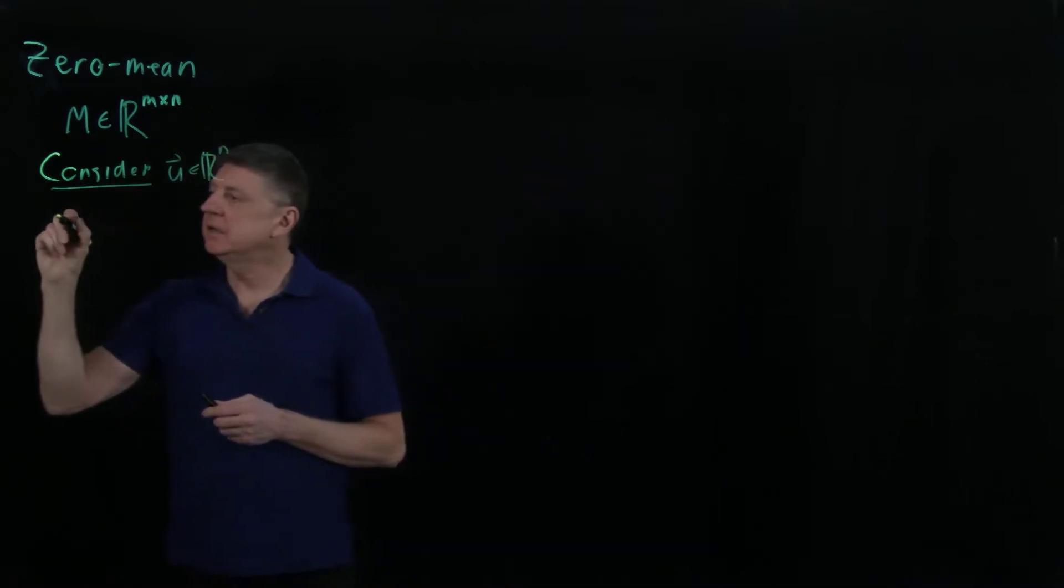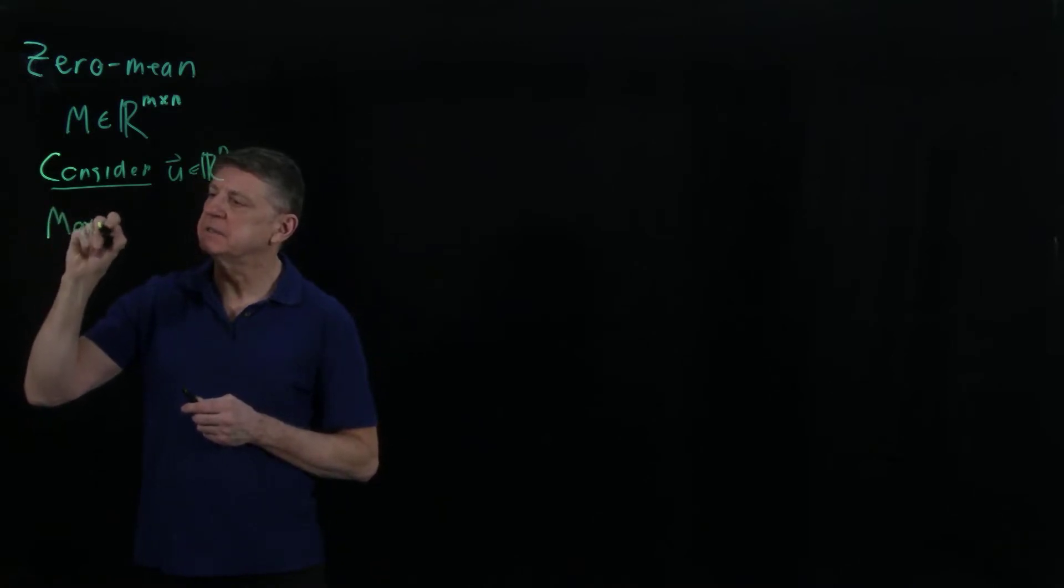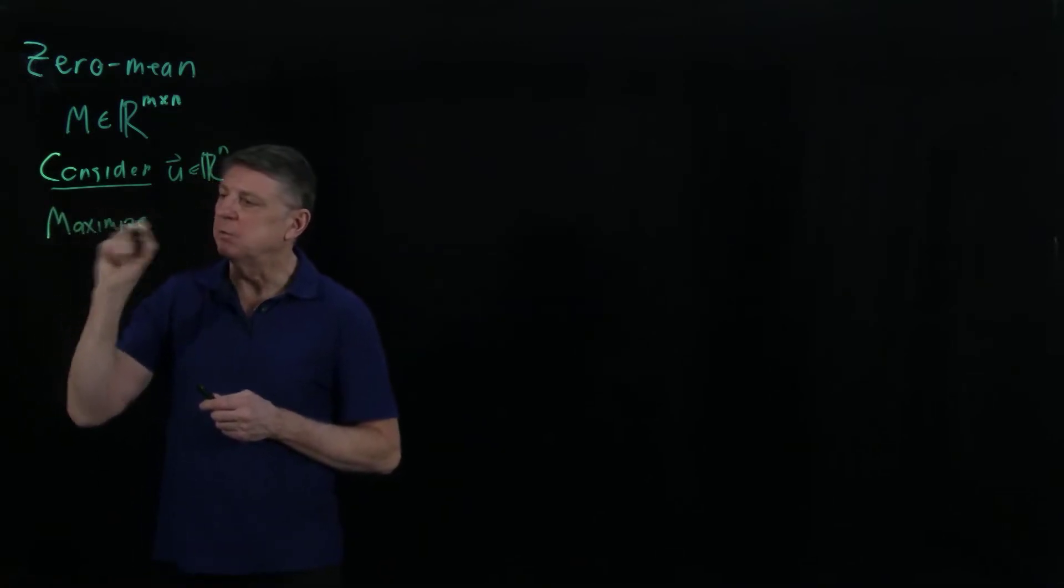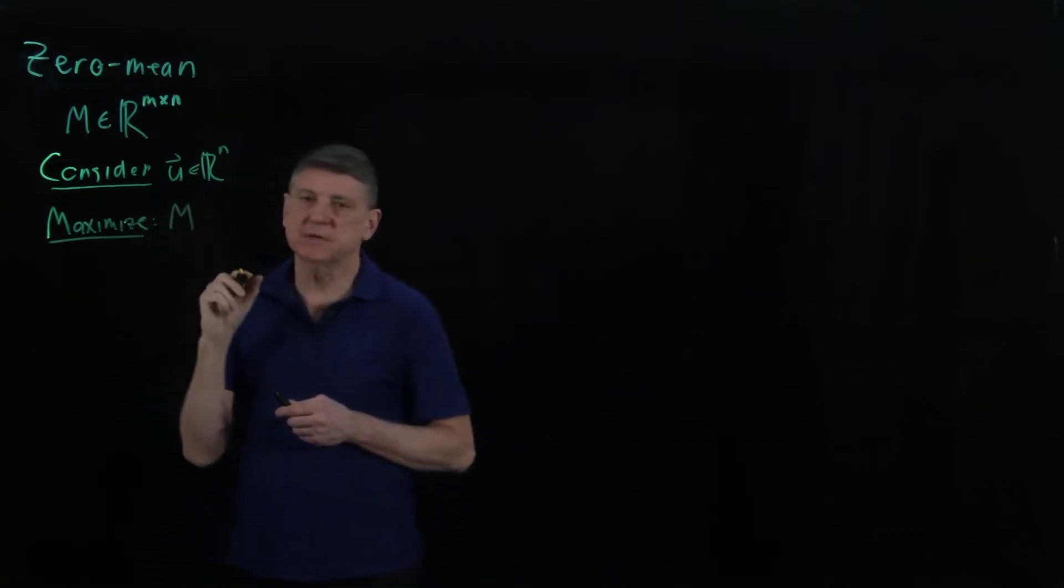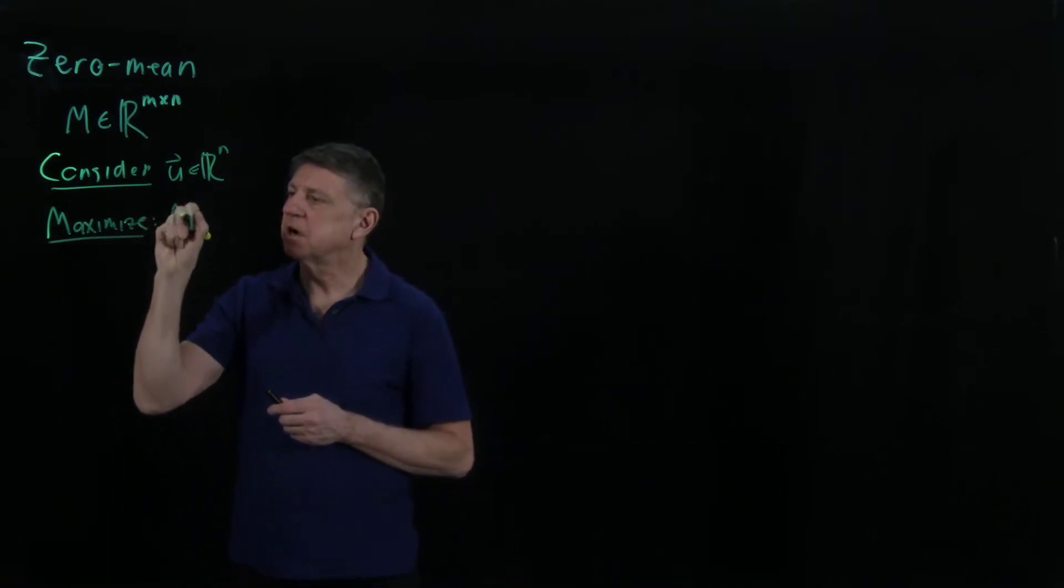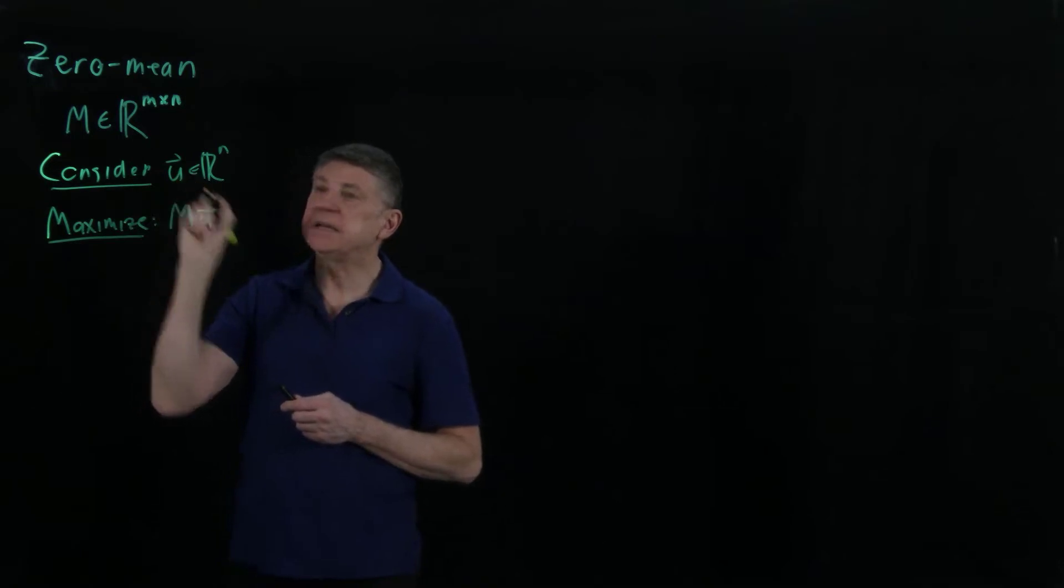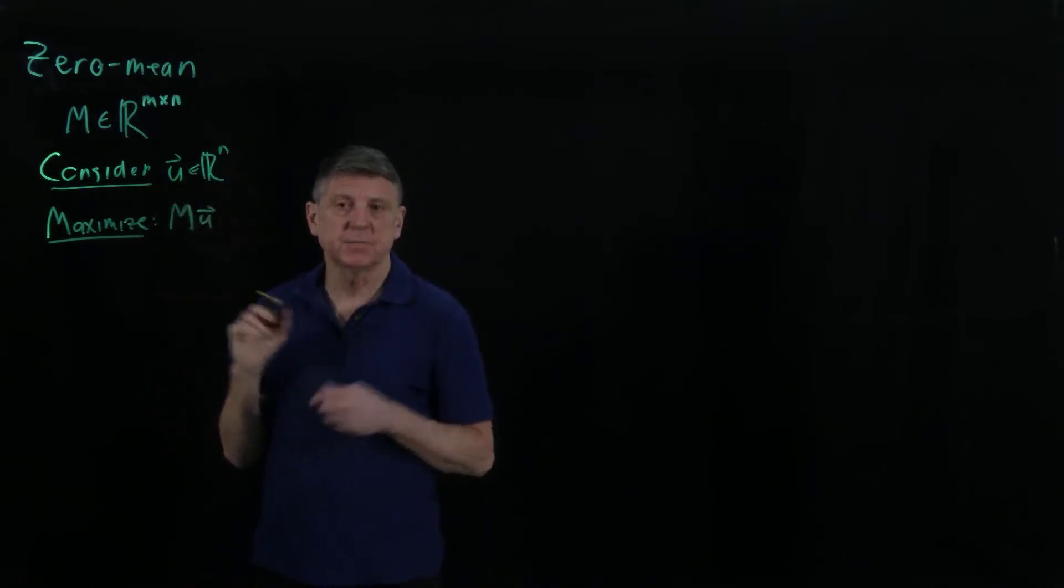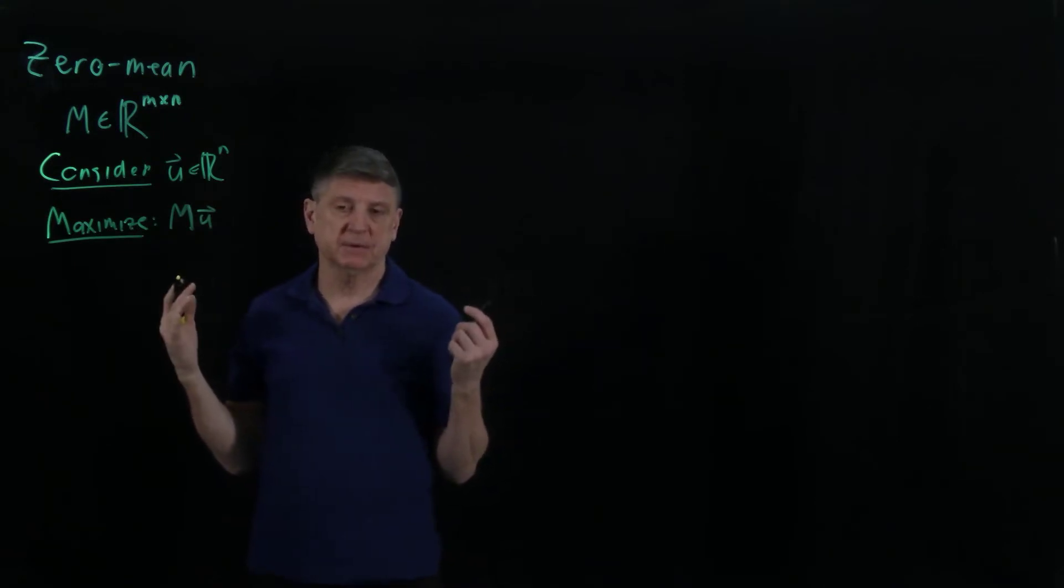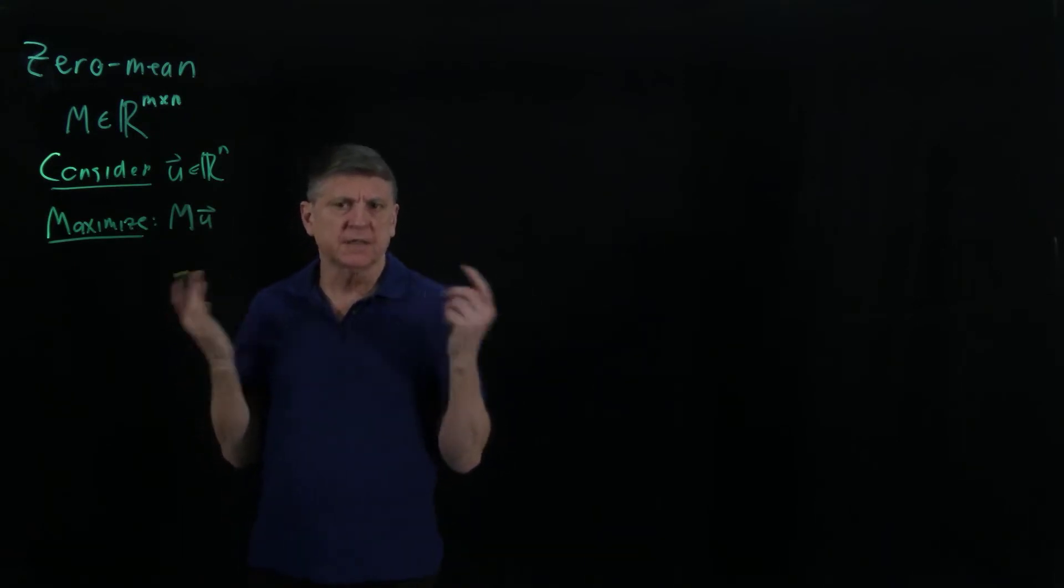Suppose that we want to maximize the output, maximize this matrix M times any vector that has all real numbers and N entries. What do we mean by maximize that? Maximize a vector, that's not clear.